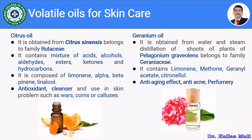Let us see citrus oil. Citrus oil is obtained from Citrus sinensis, belonging to family Rutaceae. It consists of mixtures of acids, alcohols, aldehydes, esters, ketones and hydrocarbons. It is composed of limonene, alpha and beta-pinene and linalool. It is used as an antioxidant and cleanser, and is used in skin problems such as varicose veins and calluses. Citrus oil is used in products related to skin cosmetics.